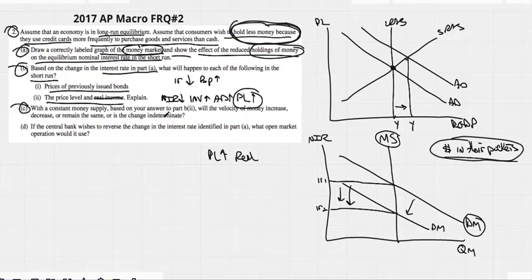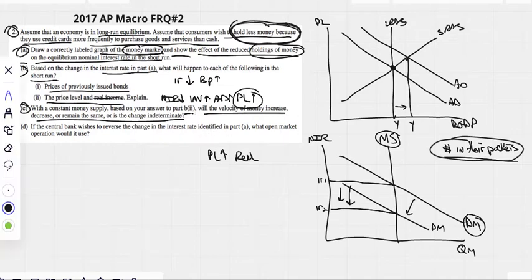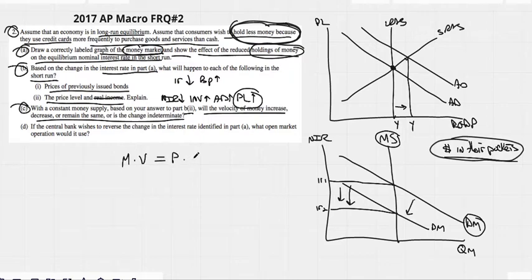All right. C, with a constant money supply based on your answer to part B, will the velocity of money increase, decrease, or remain the same, or is the change indeterminate? Do find a cheat sheet on my blog or send me an email for it on the velocity of money. It's a very small part of our course. You're going to have probably no more than one multiple choice question, and you'd be lucky if you ever see it on an FRQ, but it is something we have to know.